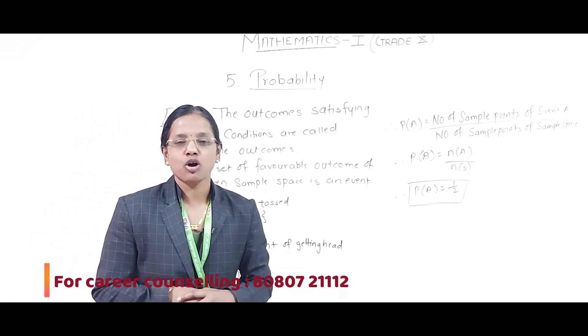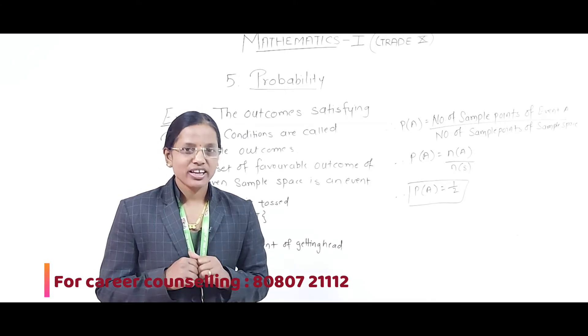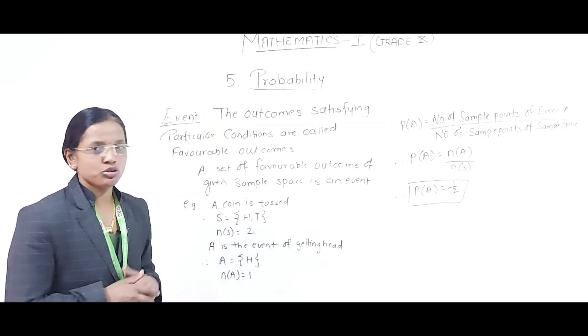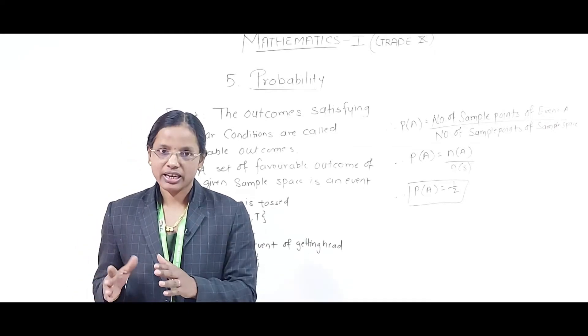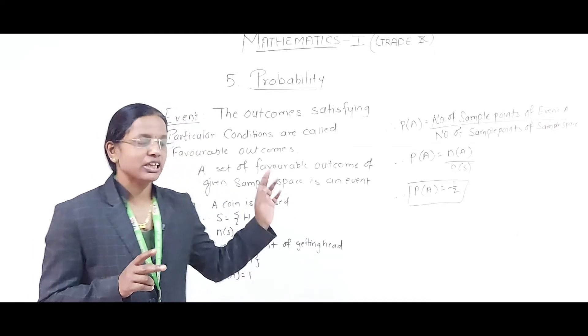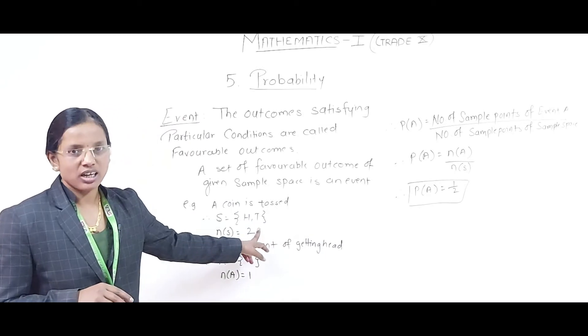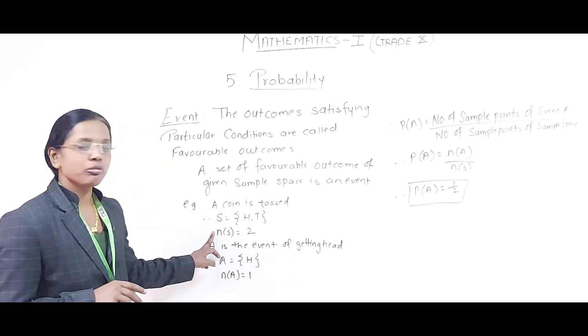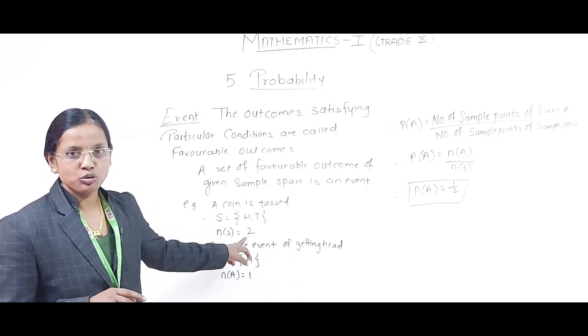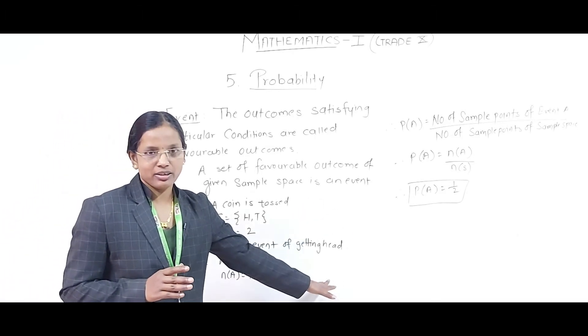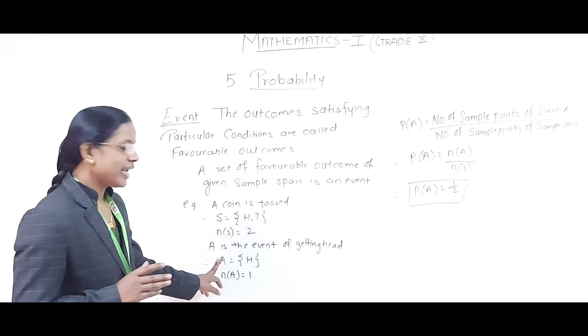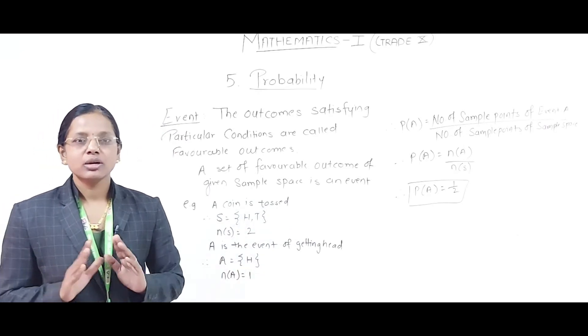For example, a coin is tossed. What will be the sample space? Either head or tail - only two possibilities enclosed in curly brackets. The number of sample points is two. Now let A be the event of getting head, so A = {H}. The number of sample points will be one.